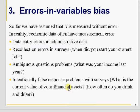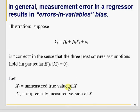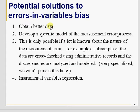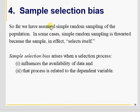Errors in variable bias: so far we are assuming there are no errors in variables, but we know that macroeconomic and microeconomic variables are not always error-free. If instead of observing X we observe X-tilde, then Xi minus X-tilde will be absorbed into Ui, and Xi-tilde and Ui will be correlated — this leads to omitted variable bias. To overcome this, you can use better data, develop a specific model of the measurement error process, or use instrumental variable regression.